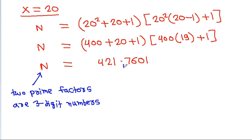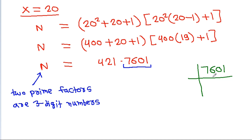Since both prime factors of n are three-digit numbers, 7601 cannot itself be prime. Trying to factor 7601: it is not divisible by 3, not by 5, not by 7, but it is divisible by 11. It equals 11 times 691.